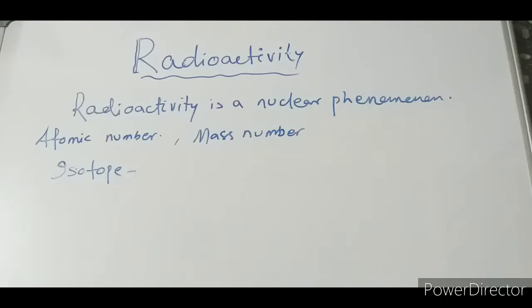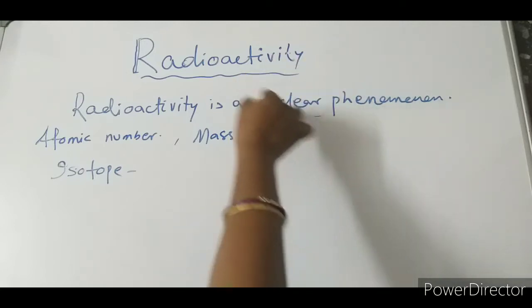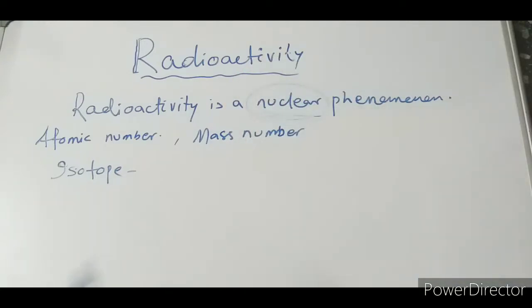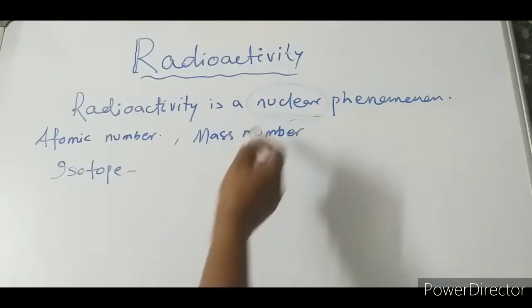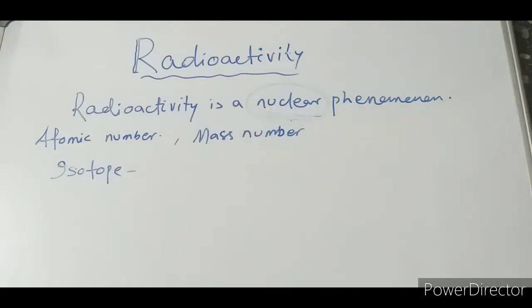Before starting, let us have a concept. Radioactivity is a nuclear phenomenon. Till now we were discussing about valence electrons. Now we will go for something different — what changes occur in the nucleus. Radioactivity is a nuclear phenomenon; whatever activity occurs is inside the nucleus. If we are discussing nuclear phenomenon, we will see what particles are present inside the nucleus — we will study about nucleons.